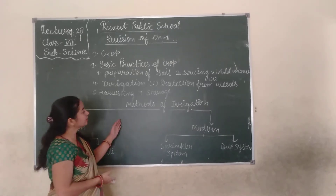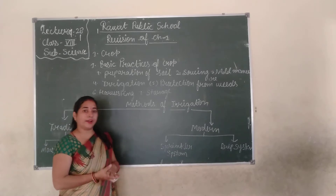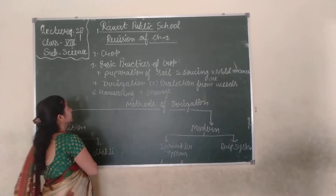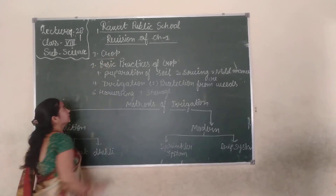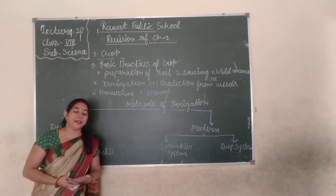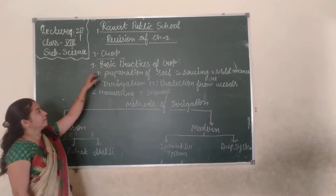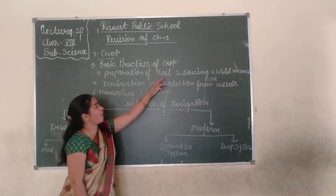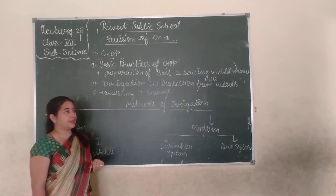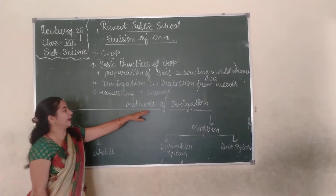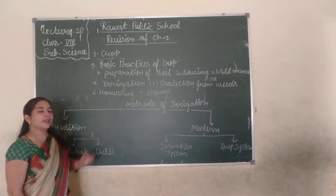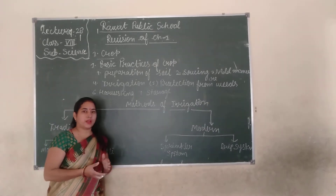In the previous classes we have already discussed chapter number 1. In this chapter today we learn about crops — what is a crop, how many types of crops, basic practices of crops, and there are 7 practices. Now modern methods of irrigation. So now let's start.